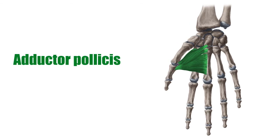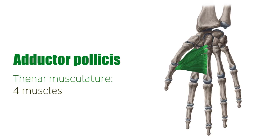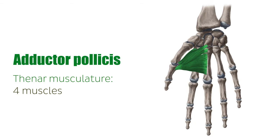The adductor pollicis, which you see on this image highlighted in green, is part of the thenar musculature which consists of four muscles located on the radial side of the palm. Together, they form the ball of the thumb, known as the thenar eminence. They originate at different carpal bones and distally attach to the thumb. The adductor pollicis muscle is made up of a transverse head and an oblique head.